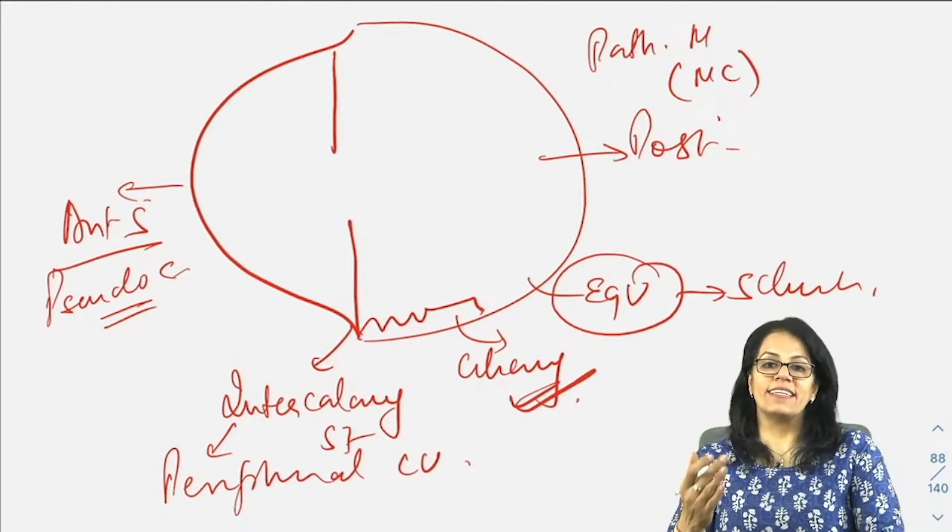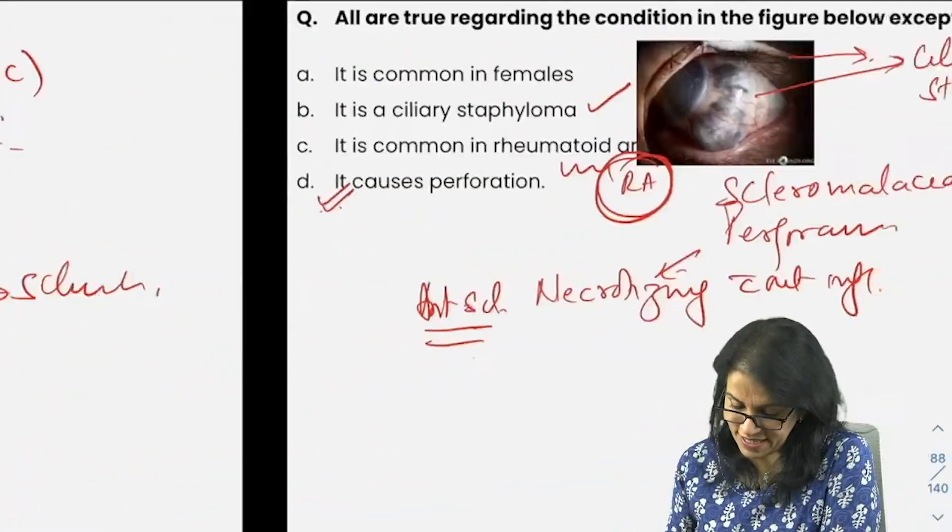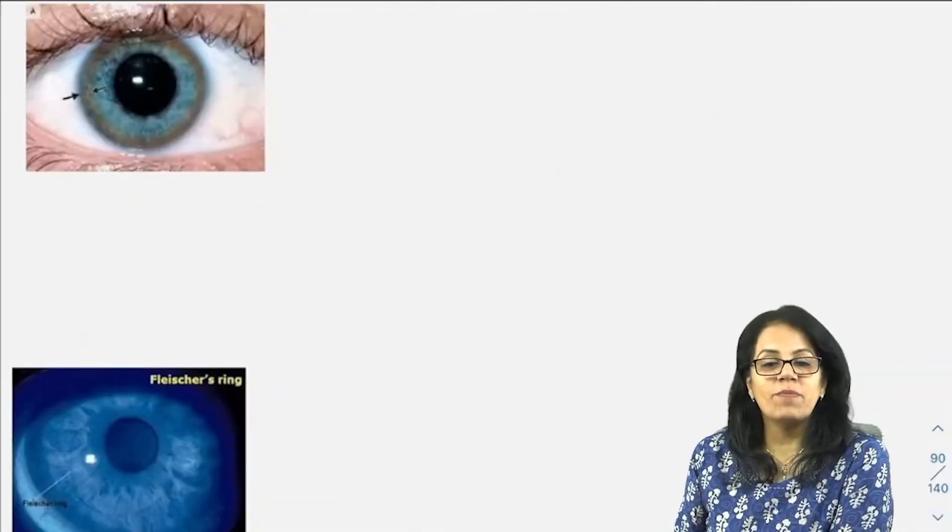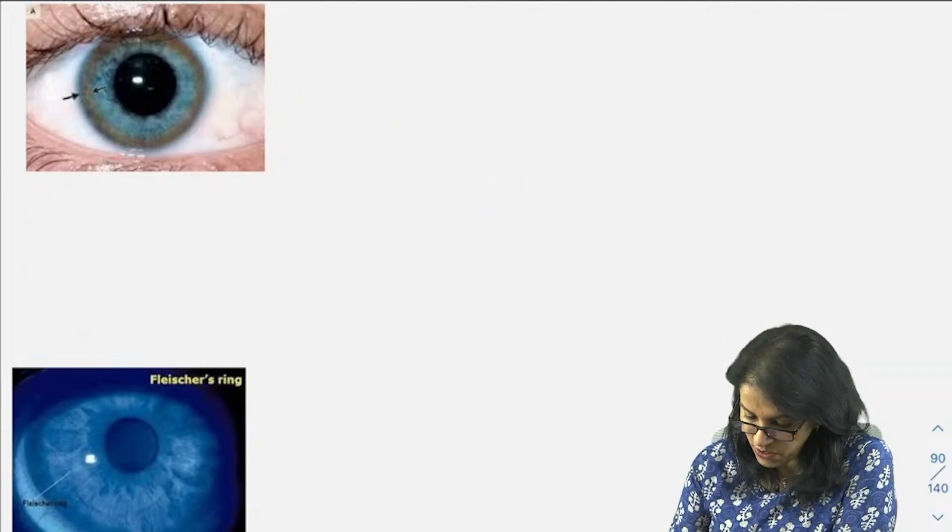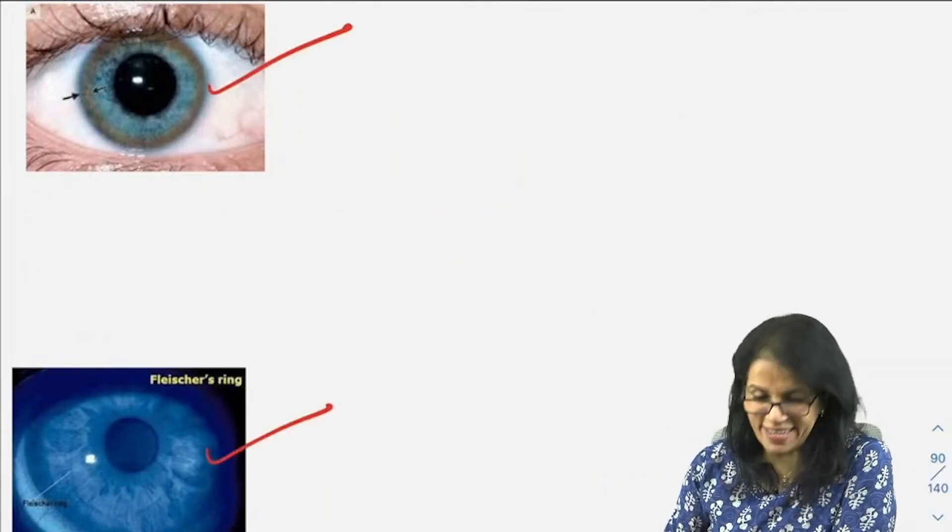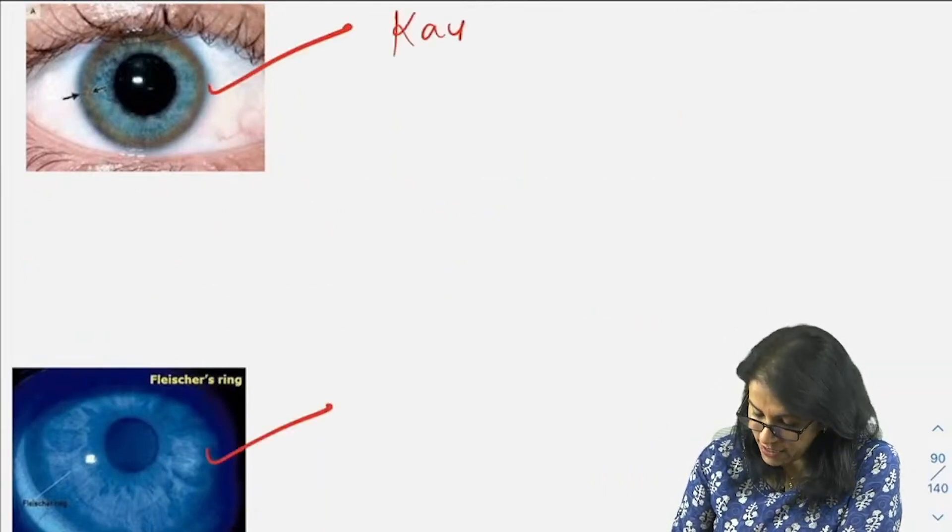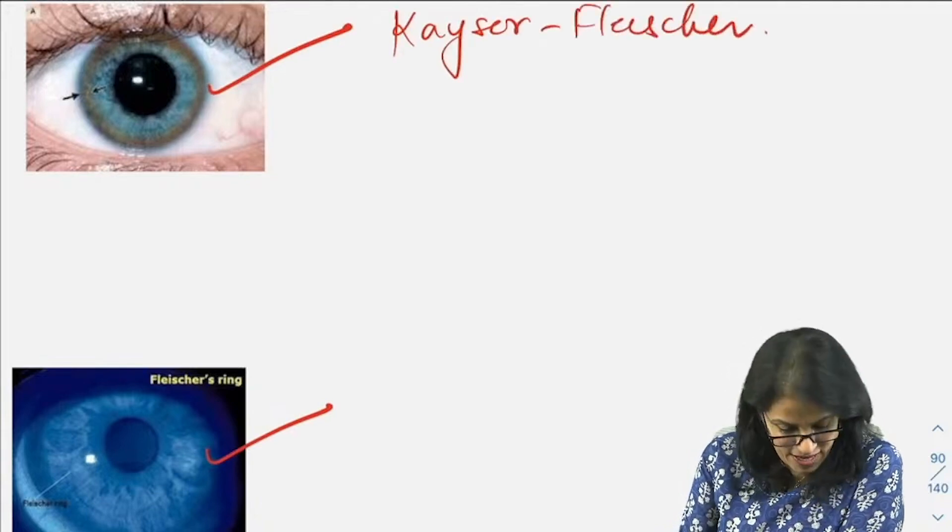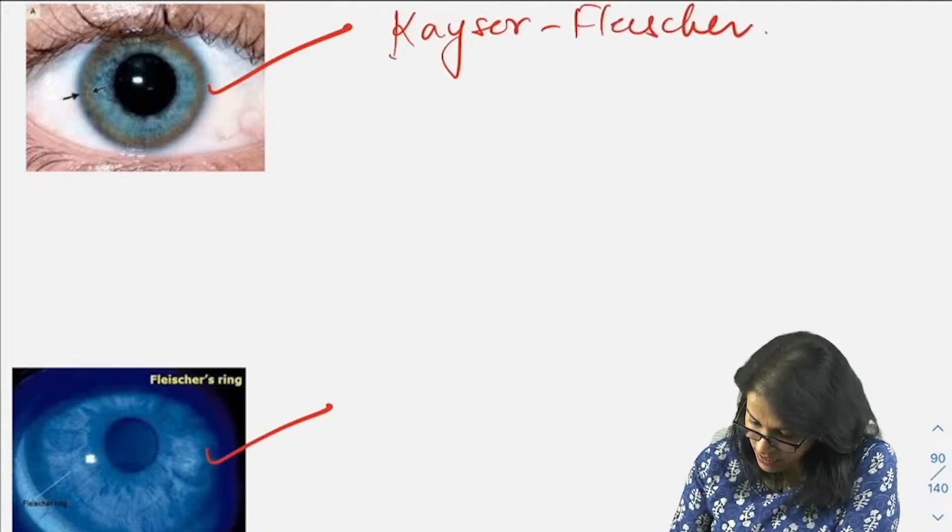This is very important. I was mentioning this: this is your FF ring, this is your Fleischer's ring. So this is Kayser-Fleischer, this is Fleischer. Don't forget this. Kayser-Fleischer, we know we are talking about Wilson's disease, we are talking about copper in Descemet's membrane.